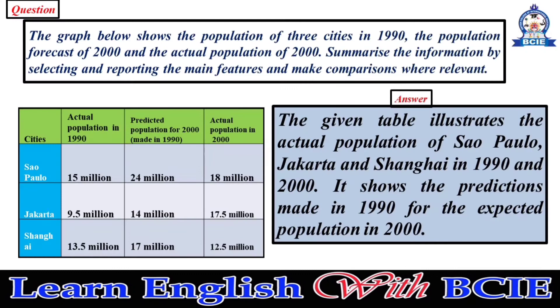The given table illustrates the actual population of Sao Paulo, Jakarta, and Shanghai in 1990 and 2000.